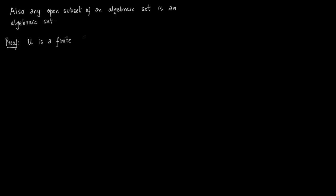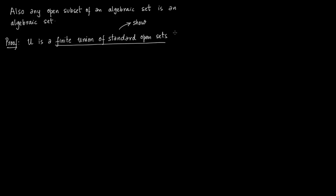The only thing to show is that this open set is a finite union of standard open sets. If it is a finite union of standard open sets, then you can close them one by one as we did before while constructing the localization. We have already shown these U_s are affine, where s is a polynomial, and we showed how to define U_s.